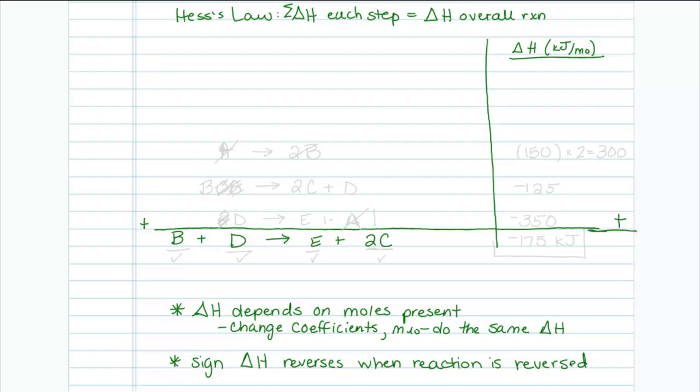The problem is that the E needs to be on the product side and in our process that we're given is on the reactant side. It's the right amount of moles, just the wrong location. So I'm going to reverse this: 2D yields E plus A. Now, if I reverse this, I don't do anything to the amount of delta H. I just reverse the sign from positive 350 to negative 350. So now I've accounted for my E.